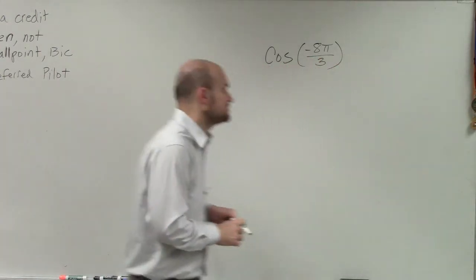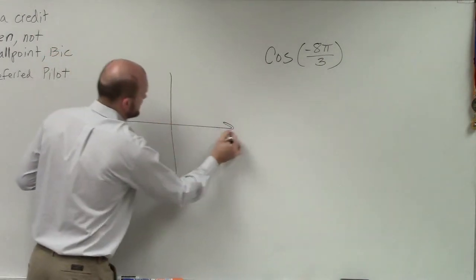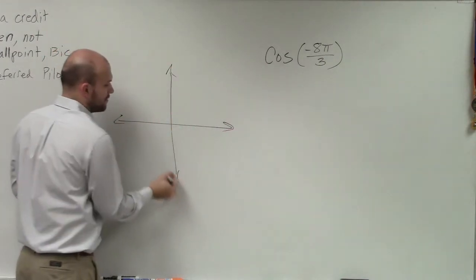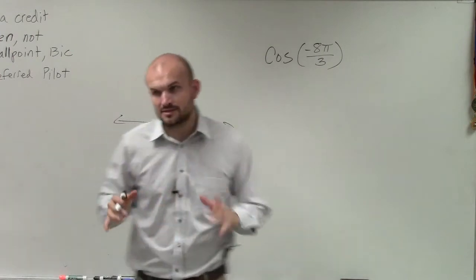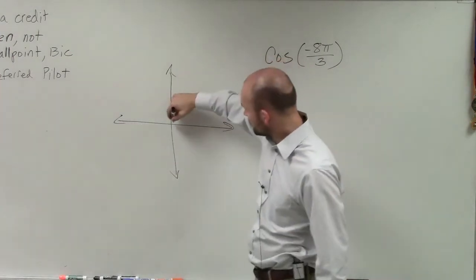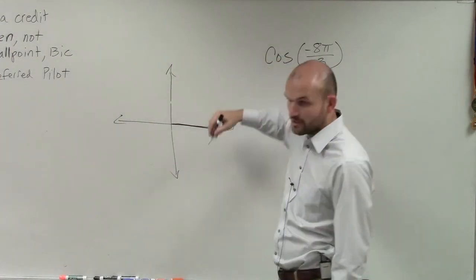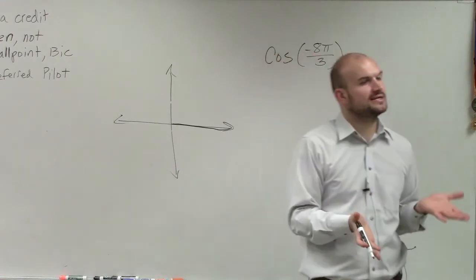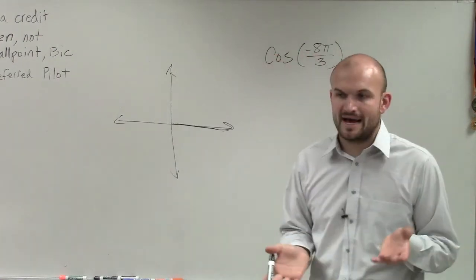So what we can do for that is, as I mentioned before, when we're trying to determine where the angle is, first thing we do is we always start with our initial side. And then we're going to rotate rays about our vertex, which is at the origin.